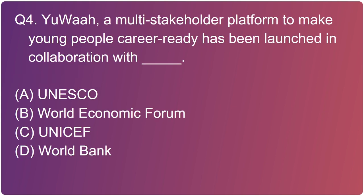Next question: a multi-stakeholder platform to make young people career-ready has been launched in collaboration with which of the following? It is option C - UNICEF. It has been launched by the Ministry of Youth Affairs and Sports and the United Nations Children's Fund by signing a statement of intent to establish Generation Unlimited in India. It provides career guidance and entrepreneurship classes to young people and contributes towards Atmanirbhar Bharat.